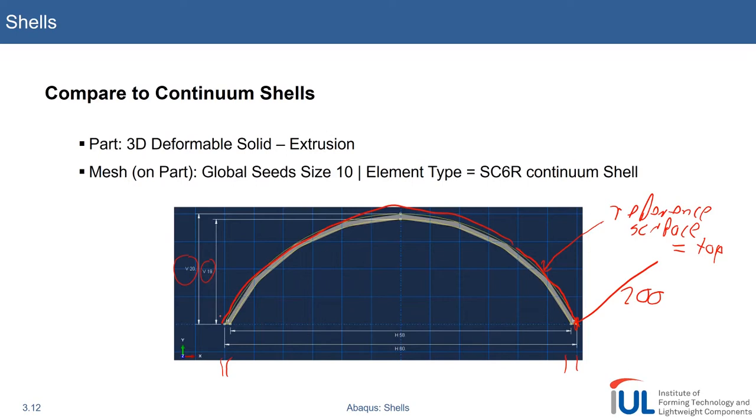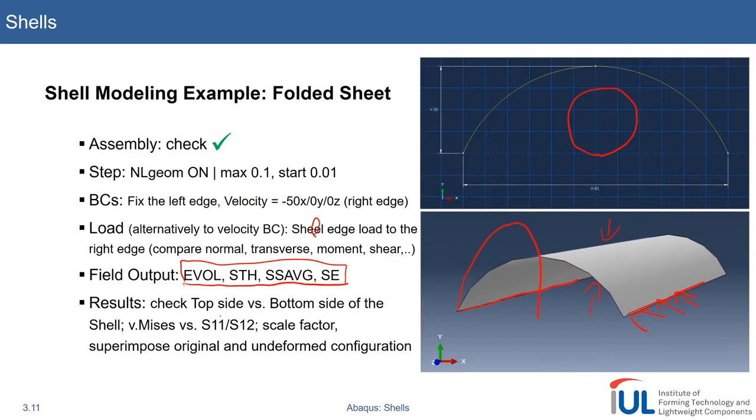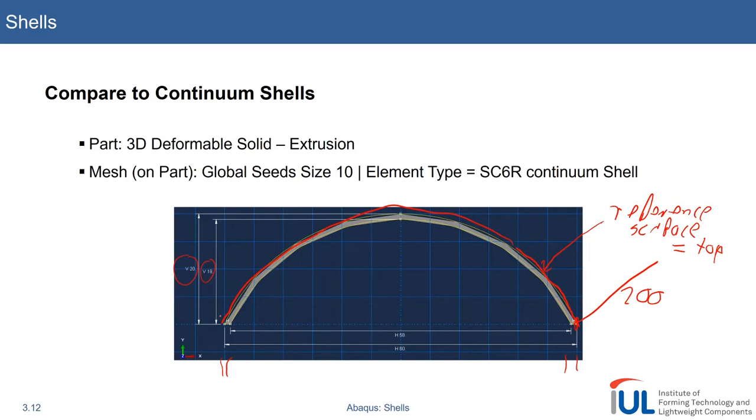If we would, for example, use reference surface equal to middle or bottom in this case, it would be slightly different to what we would model using this type of deformable solid. If we would do middle surface formulation, we would have to go 61, 61 and 59. I hope you get the idea that specifying where the reference surface for the conventional shell is located is very important.